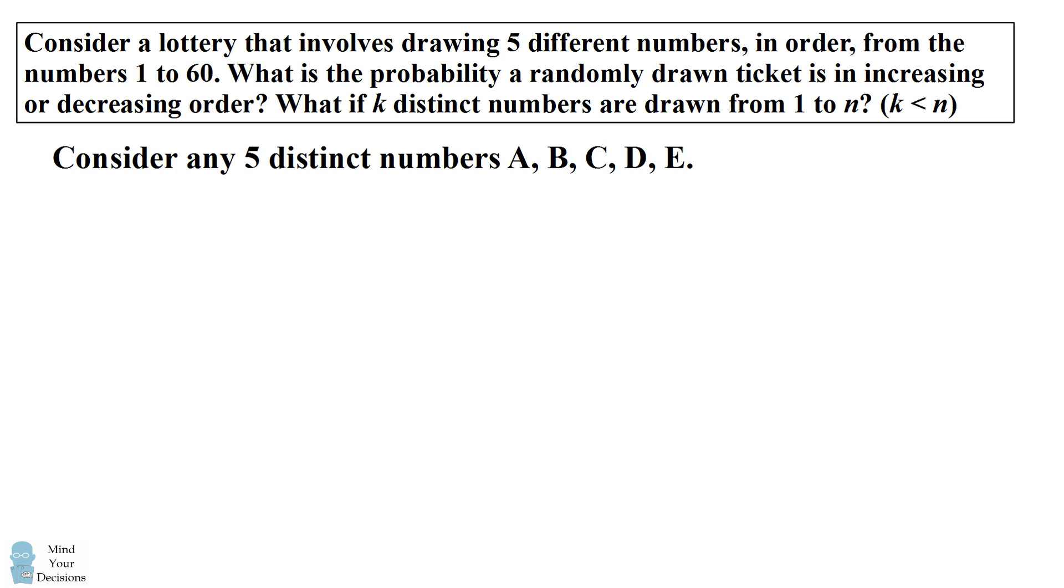How many ways are there to arrange these numbers? Well, the first number can have any of five possible choices. The next number can be any of the four you haven't used. The next number can be any of the three choices you have not used. Then the next number will have two choices, and the last number will be fixed. So there are 5 factorial, or 120 ways, to order these five distinct numbers.